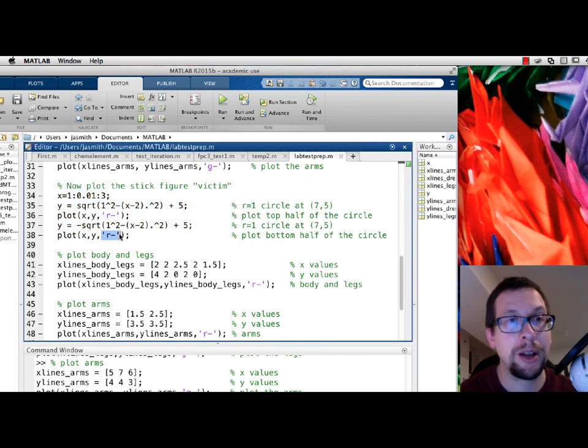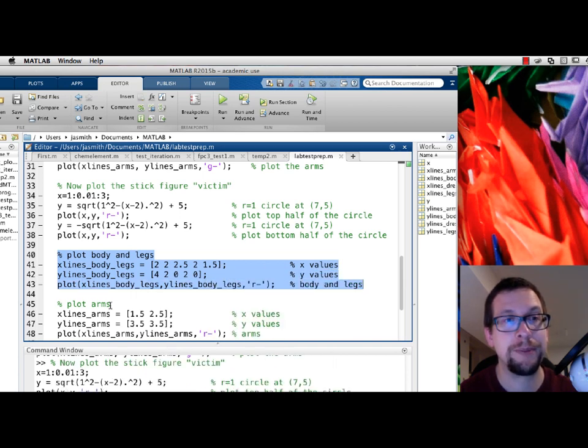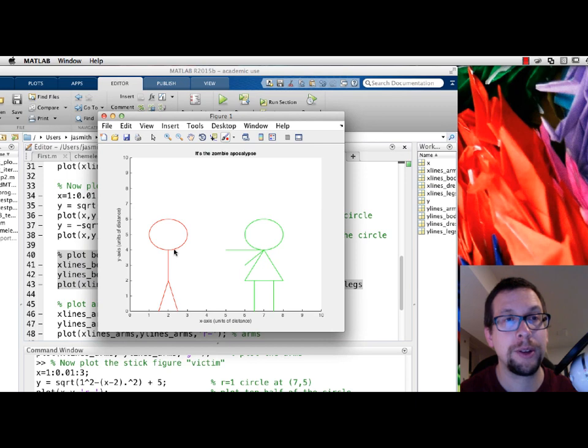If you notice in the plot for the victim, we asked for it to be in red with lines. Okay, so red lines. Now I'm going to try for red lines for the body and the legs. Evaluate selection. There you go. So two legs and a body.